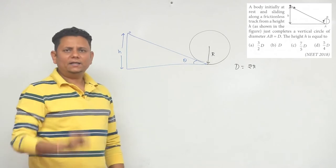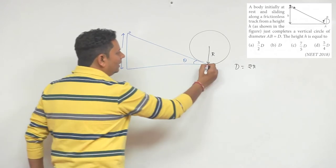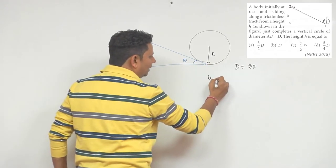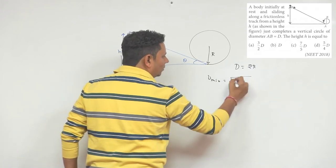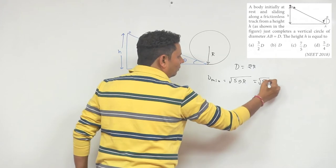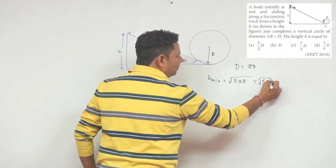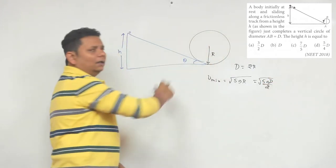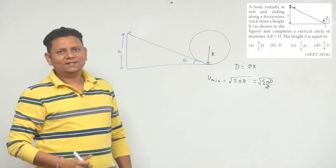For the vertical circle to just complete, in this location we need V minimum value of square root of 5GR, so it will be square root of 5G times D by 2. This minimum velocity here, in this location, means the particle will just complete the vertical circle.